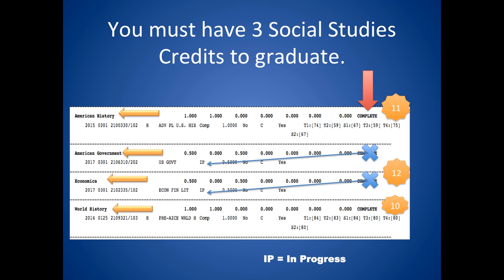The next part of your report breaks your credits down into what we call required graduation buckets — it breaks down your credits by those specifically required for graduation. At the top is American History, typically taken in 11th grade. You are also required to take American Government Economics, typically taken in 12th grade, and you must also take World History, typically taken in 10th grade. The red arrow is pointing to a very important column — especially if you are a senior — where once you complete a requirement, it will show complete in the far right-hand column. This particular student is a senior, but the report shows he is complete for American Government Economics, which is not totally correct. These two classes are actually in progress, as the IP notates in the middle of the row. IP means in progress, meaning you are currently taking the class.